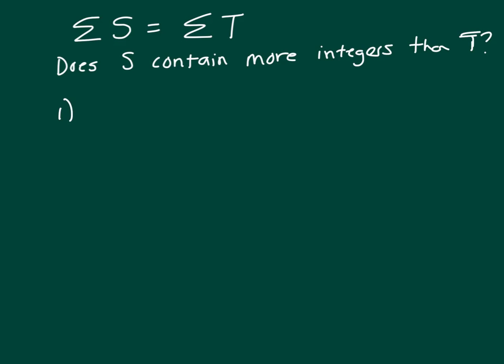If you look at clue 1, clue 1 says the average of the integers in S is less than the average of the integers in T. So, average of S is less than average of T. That's going to work because the way you find the average, you sum up all your numbers, you divide by however many you have.